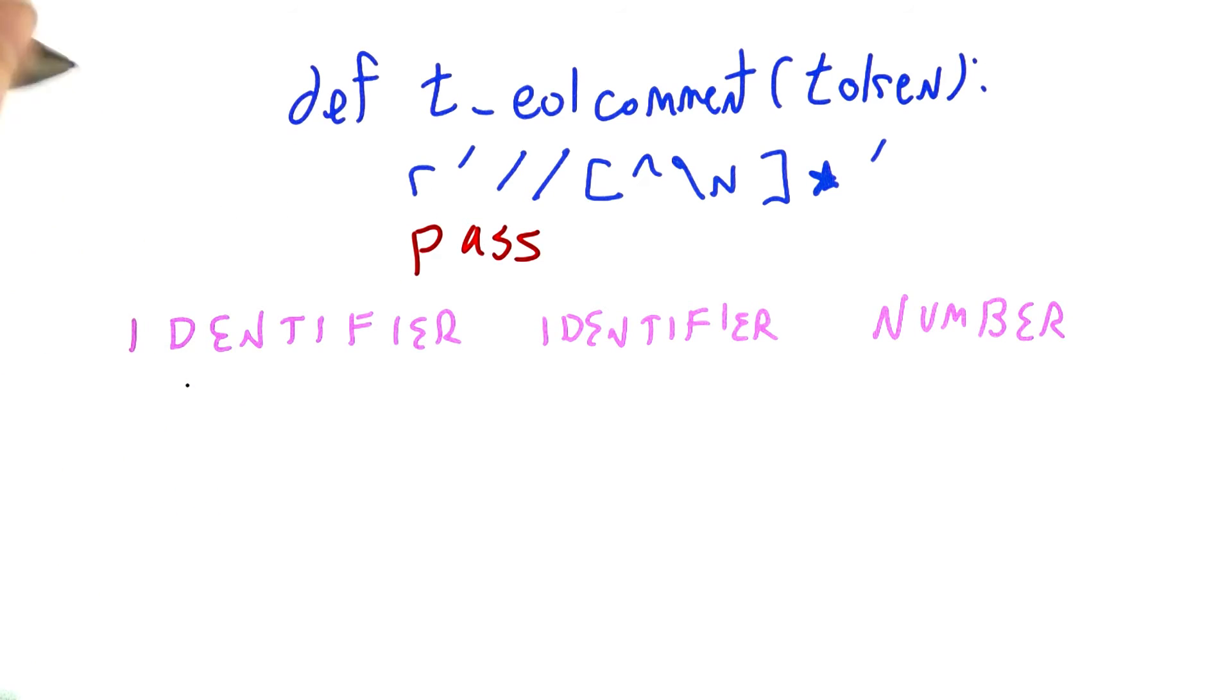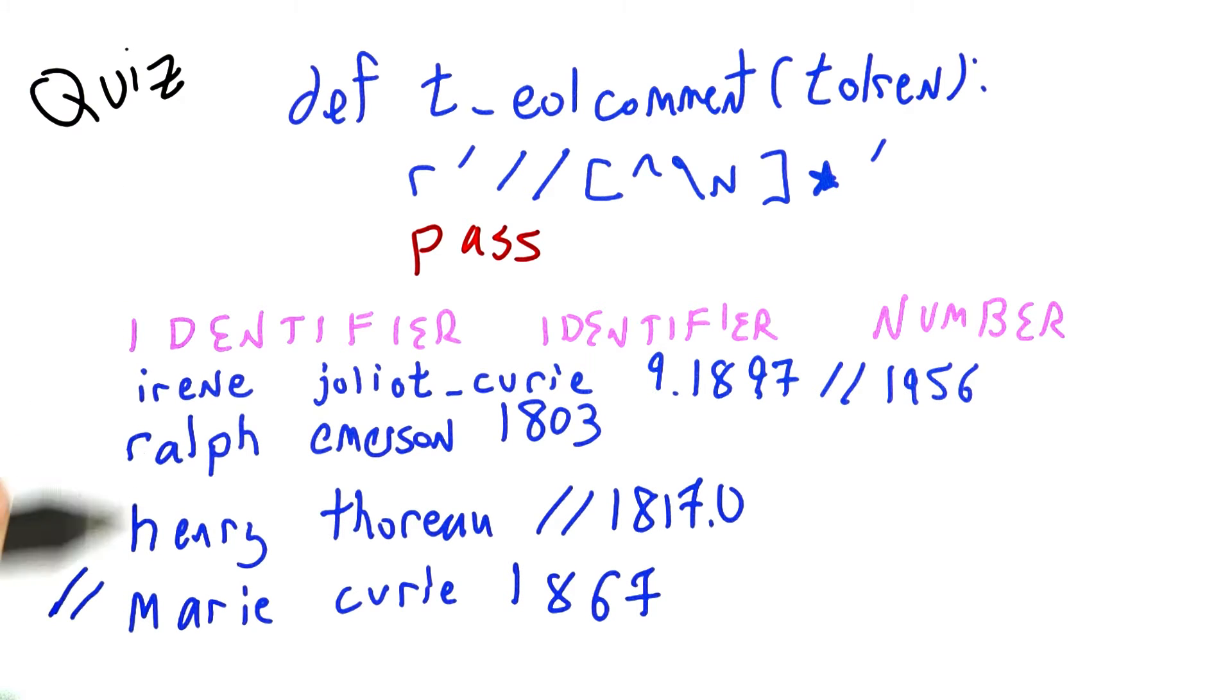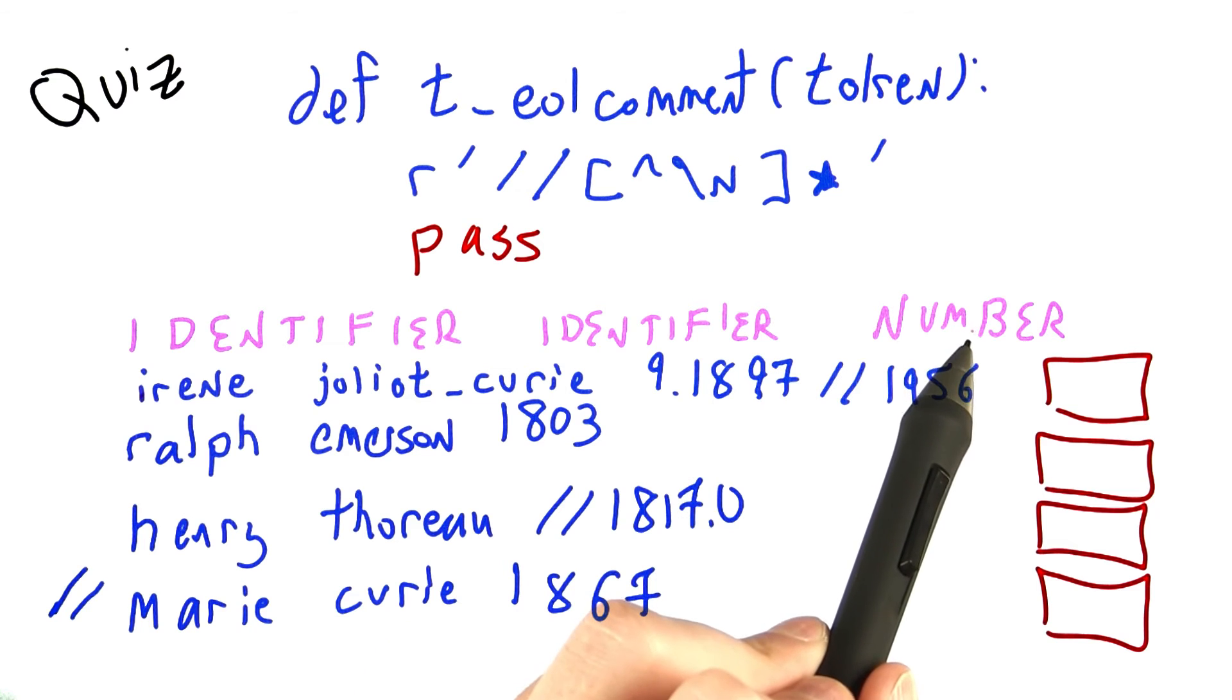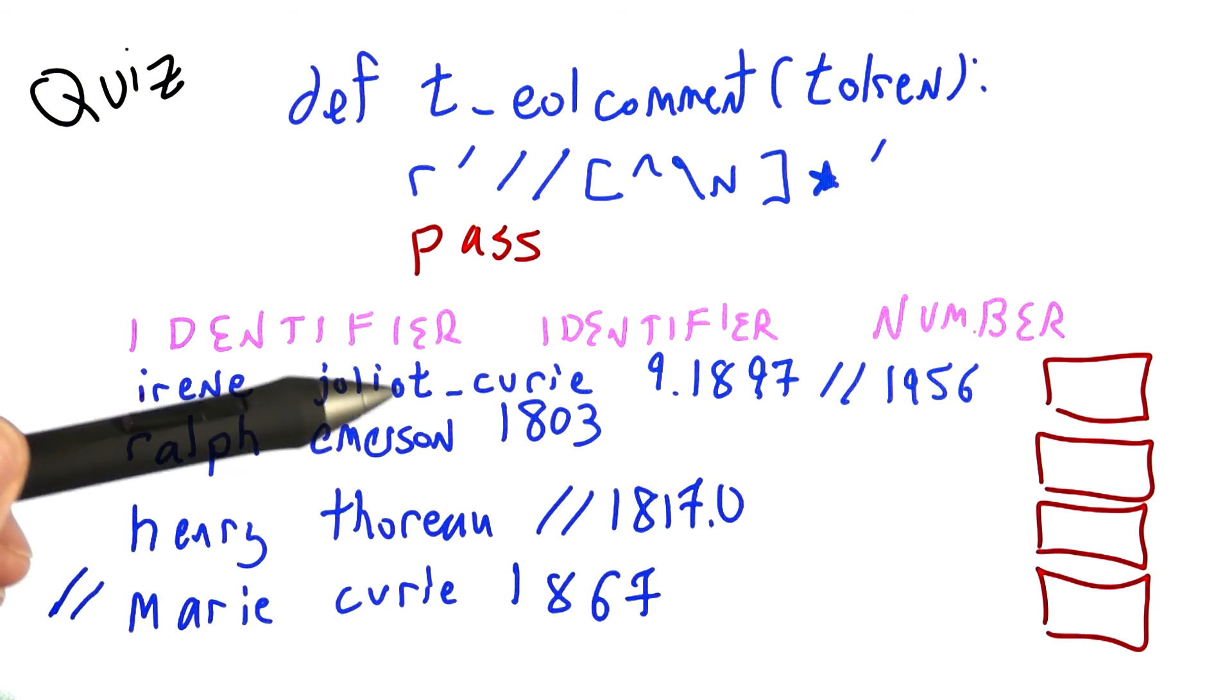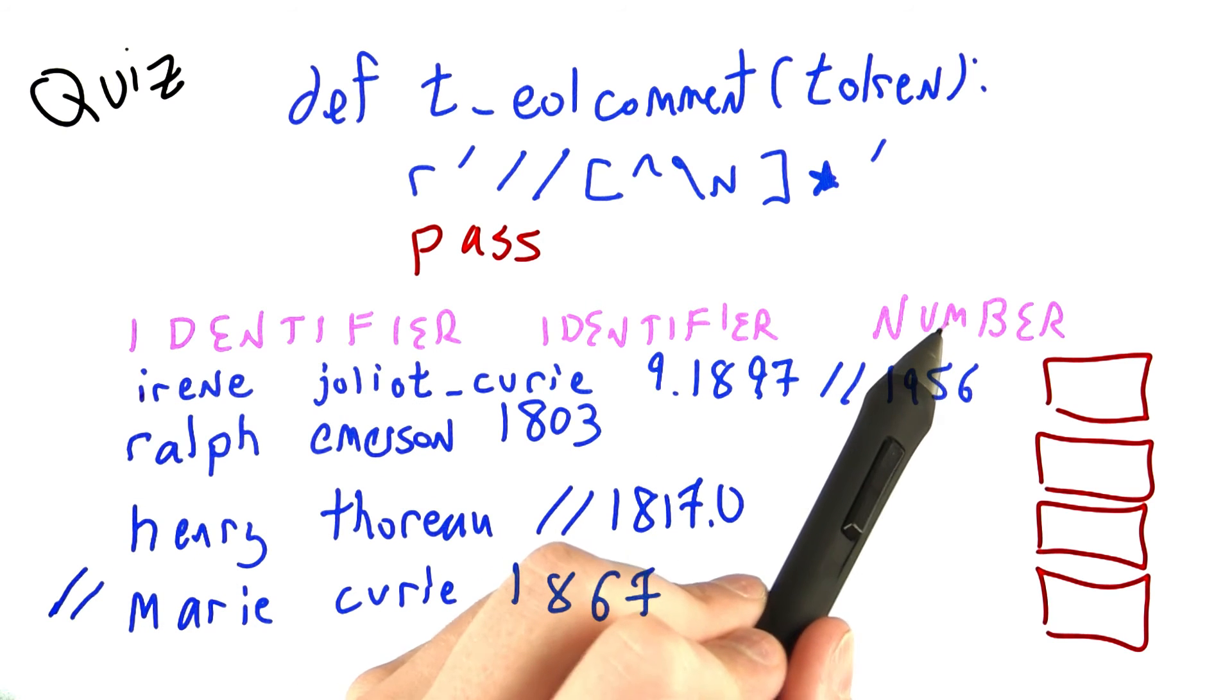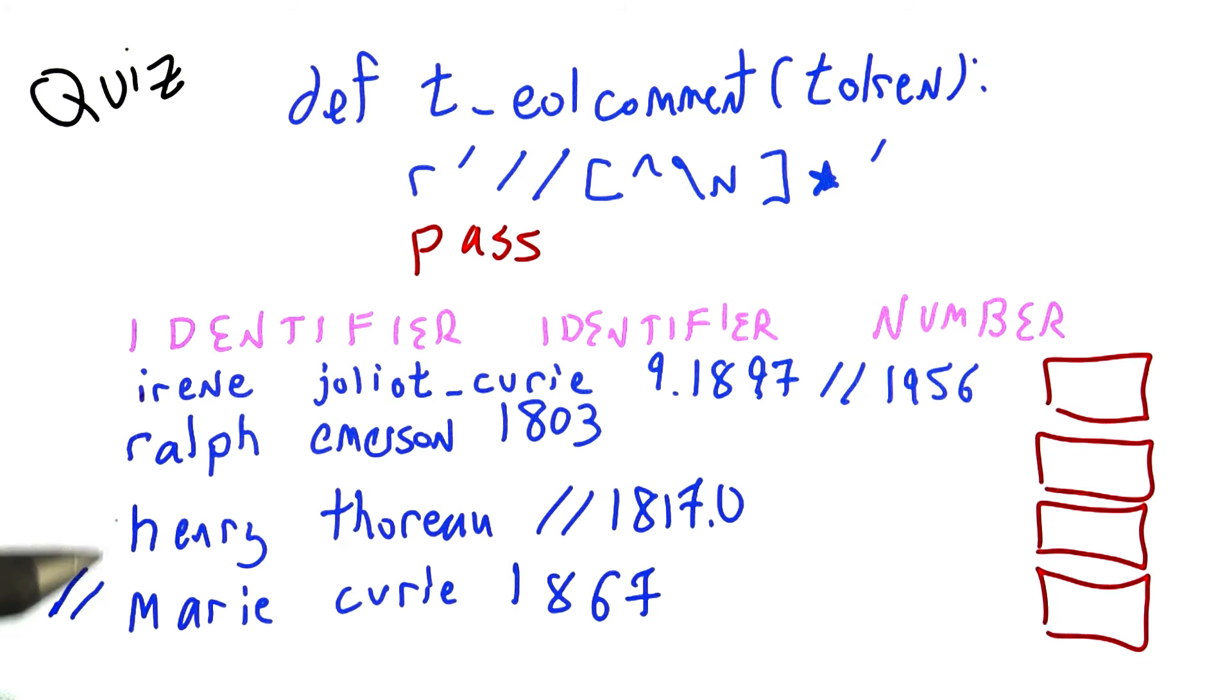So let's test our knowledge of this rule with a quiz. I've written out four sequences of input, and I'd like you to indicate which of these four sequences would yield identifier, identifier, number, given the rules we've been talking about for JavaScript. You've seen how we define identifiers, how we define numbers, and what starts an end of line comment.